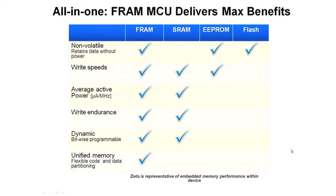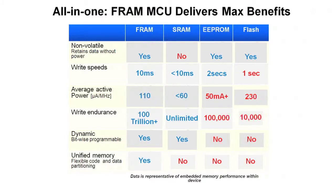Looking at all the memory technologies available in a microcontroller — FRAM, SRAM, EEPROM, and Flash — only FRAM has all the capabilities you are looking for: non-volatility, high write speeds, low average power, high write endurance, and bitwise programmability. Only FRAM has the ability to be unified memory, so you can flexibly partition code and data. You only have to buy a single device and decide whether to use part of it as SRAM or part of it as Flash.